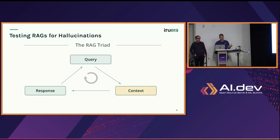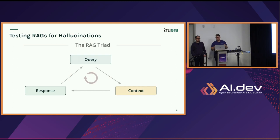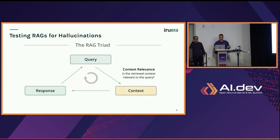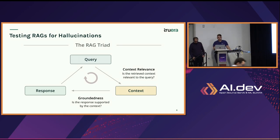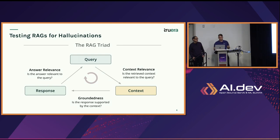So how do you go about testing these RAGs for hallucination? We use what we call the RAG triad — you can think about evaluations on each edge of the architecture. Between the query and context, we use context relevance to measure the quality of each retrieved chunk. Going from context to response, we use groundedness to test if the response has evidence to back it up. And we use answer relevance to see if we're actually answering the original user query.